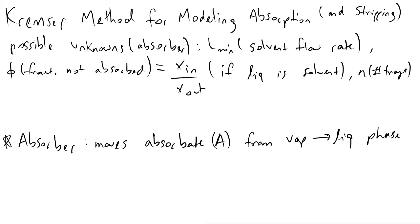And for this example, I will assume we are working with an absorber. The possible unknowns that we work with when talking about absorbers are the minimum solvent flow rate, which for absorbers will be the liquid phase, as well as the fraction-non-absorbed variable we define as phi. Phi will be equivalent to x_in over x_out, where x denotes the molar ratio of the inlet solvent, and x_out is the molar ratio of the absorbate exiting our absorber.